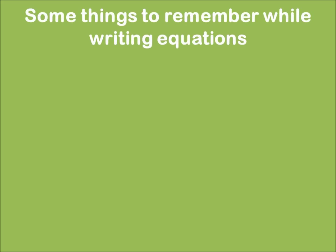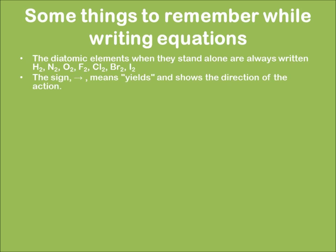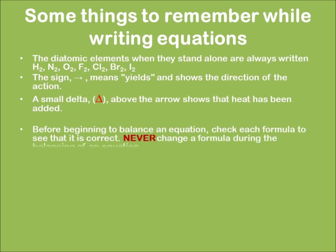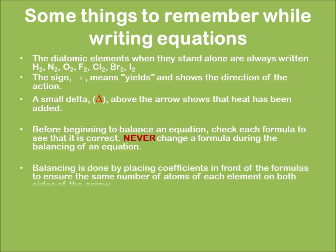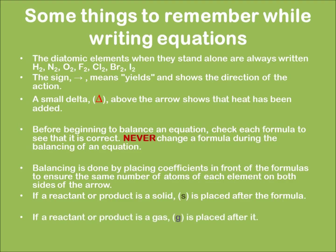Now there are some things to remember while writing down a chemical equation. In case of diatomic atoms, they have to be shown as a standalone molecule. The sign of an arrow represents the direction of action of the equation. A small delta above the arrow shows that heat was involved in the reaction. One must ensure that we never change the formula while writing down the equation. Balancing is just a numerical method. And one must note that physical states are always in small alphabets and all the physical states have to be represented after each and every compound in a bracket.